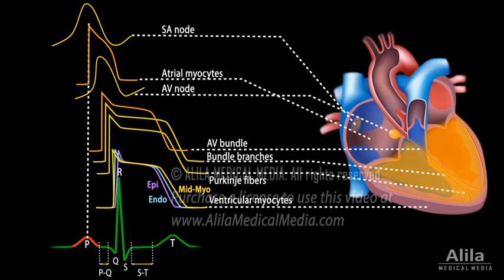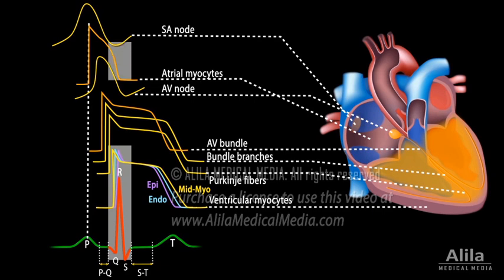The P wave represents the sum of depolarization in all atrial myocytes. The QRS complex reflects ventricular depolarization. Atrial repolarization also occurs during this time, but the signal is obscured by the large QRS complex. The ST segment reflects the plateau phase of action potentials in ventricular myocytes — this is when the ventricles contract and pump blood.